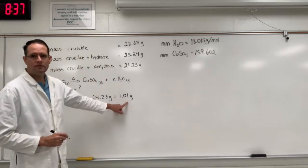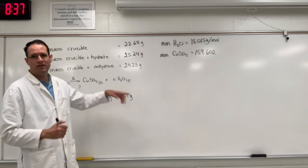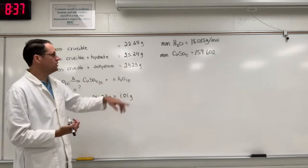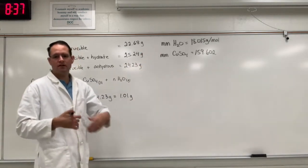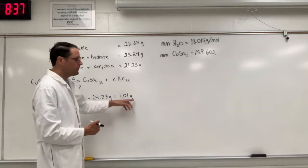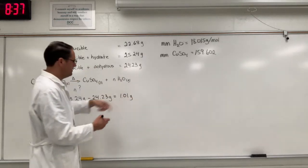Now when you show the math, just don't write 1.01 grams because we have different masses here. We have grams of the crucible, grams of water, grams of copper sulfate, grams of copper sulfate hydrate. So write H2O after that.